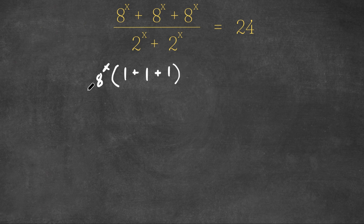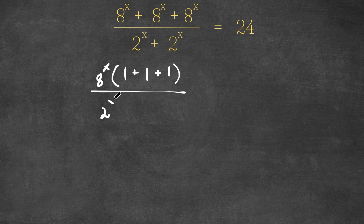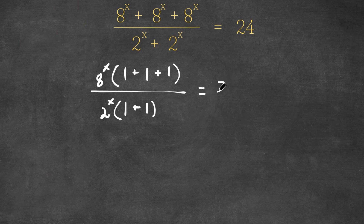And now we're dividing this by — I'm going to factor out 2 to the power of x from the denominator. So now I have 2 to the power of x times — 2 to the power of x divided by 2 to the power of x is 1, plus the same thing, 1. This is equal to 24.